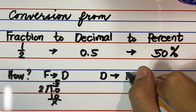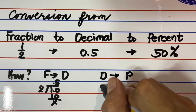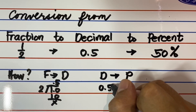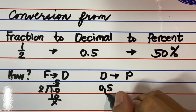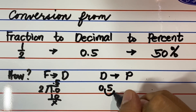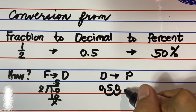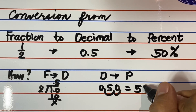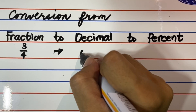How do we convert 0.5 or five-tenths to percent? We simply move the decimal point two places to the right, then affix the percent sign. Watch and learn. 0.5 or five-tenths becomes 50%. Let's have another example.